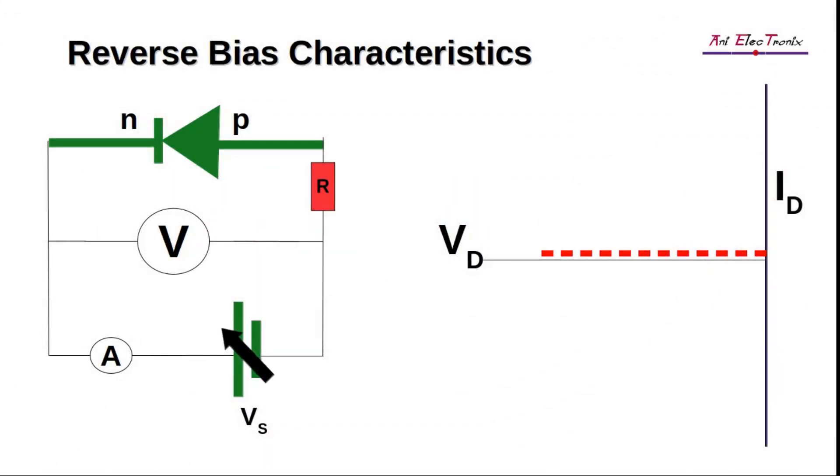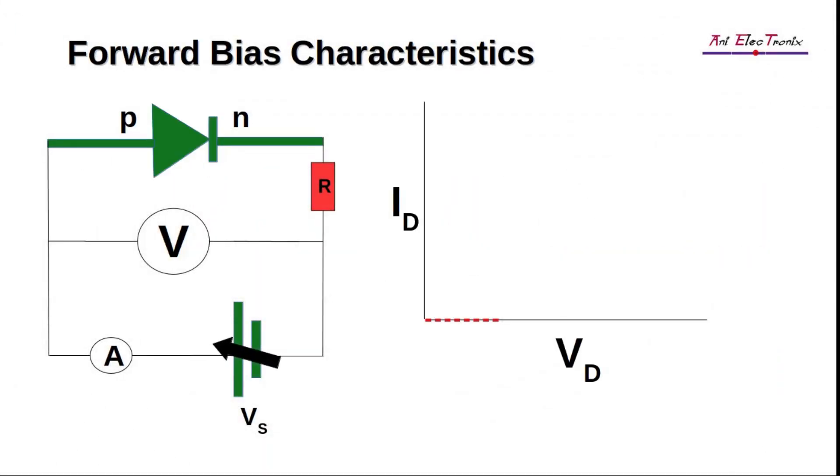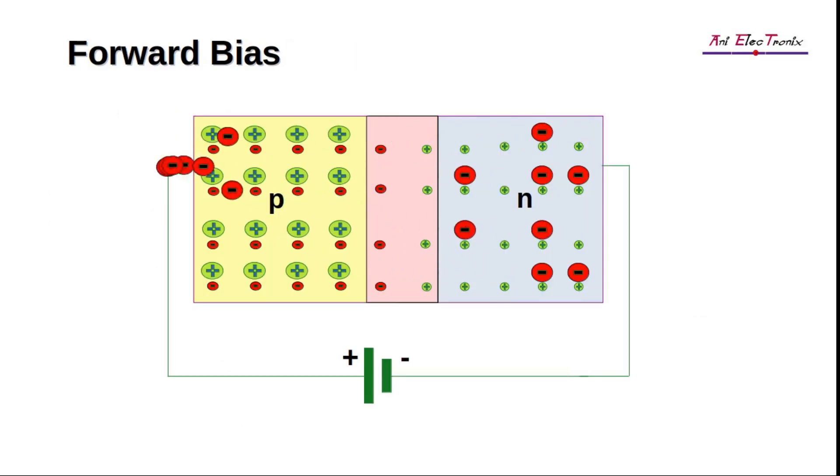Now let's look at the diode resistance in more detail. The diode resistance can be defined as the resistance that a diode offers to the flow of current through it.